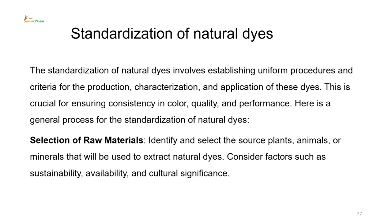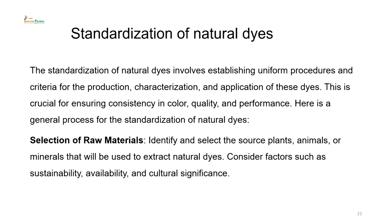For example, in madder (also called manjistha), the stems, roots, and leaves all have dyes, but all three parts have different dye content in terms of percentage. If we use stem or leaves instead of root, it is not a good idea because the maximum dye content is present in the root. Hence, selection of raw material is very crucial — we should determine which part of the plant has the maximum dye content to begin with.